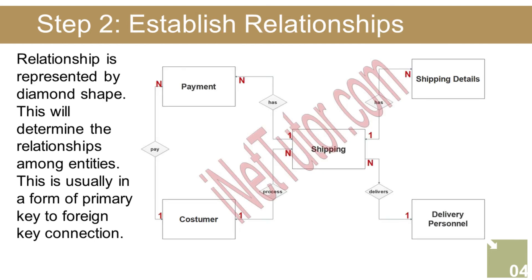Step 2: Establish relationships. This is usually in the form of a primary key to foreign key connection. The customer can process one or more shipping transactions — a one-to-many relationship. Shipping information may include one or more items or packages — one-to-many. Delivery personnel can deliver or process multiple shipping records — one-to-many. The customer will pay the transaction fee based on shipping cost and items, and customer records may appear multiple times in the payment record — one-to-many. Shipping transactions may be paid in cash, credit, or installment, meaning shipping info may appear more than once in the payment history — one-to-many.